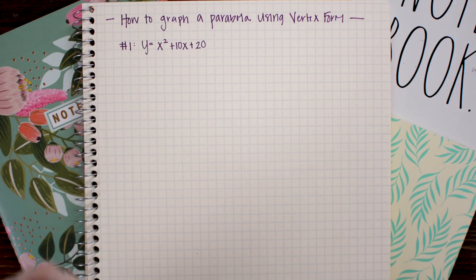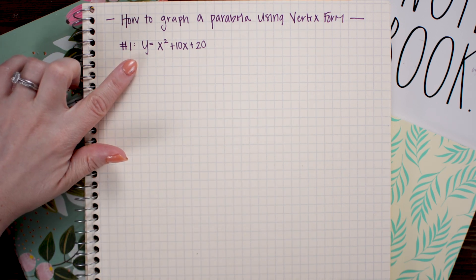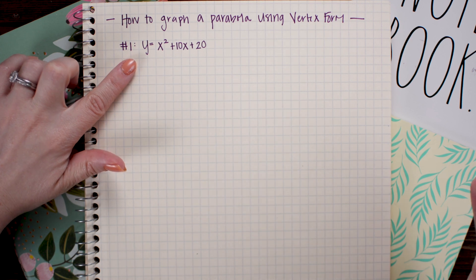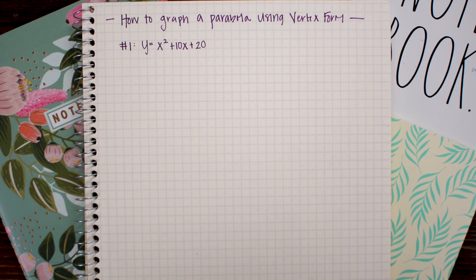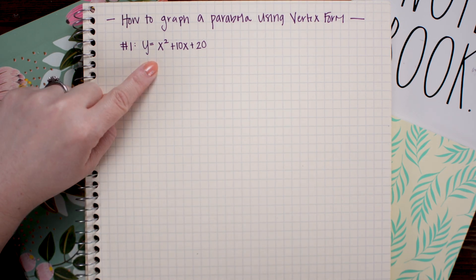Today you are going to learn how to graph a parabola using the vertex form of the equation, and we are going to begin by graphing the equation y equals x squared plus 10x plus 20. But before we get started we need to know a couple things. One of the things we need to know is the graph of the parent function — the most basic form of this equation. In this case we want to know what the graph of y equals x squared looks like.